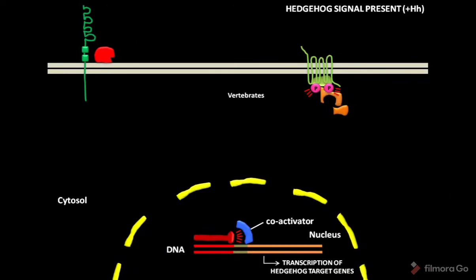In vertebrates, there are three CI-like gene regulatory proteins. They are GLI1, GLI2 and GLI3. Only the GLI3 undergoes proteolytic processing like CI and acts as either a transcriptional activator or a transcriptional repressor. The GLI1 and GLI2 act exclusively as transcriptional activators.